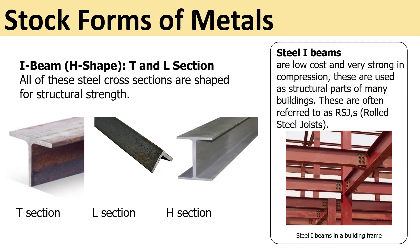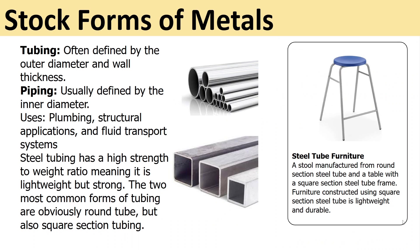H-beam, T-section, and L-section are different sections of steel supplied in structural forms. The H-section is sometimes referred to as I-beams or rolled steel joists, and you can see these used in a building frame made from rolled steel joists.